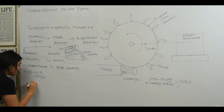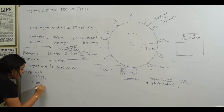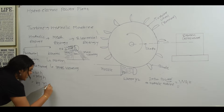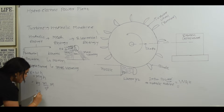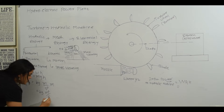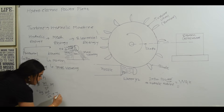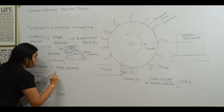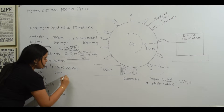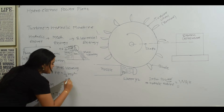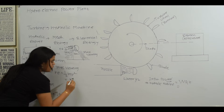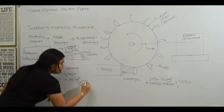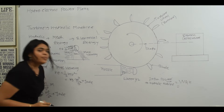Now let's derive the units quickly. Mass will be in kg, gravity is acceleration — that means meters per second squared — and head will be in meters. This gives kilogram times meter squared per second squared, which is nothing but the joule. Kinetic energy is a function of mass and velocity: one-half mv squared. Mass is in kg and velocity is in meters per second, but here it is squared — so the unit is also joules.